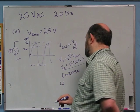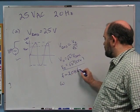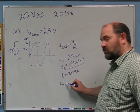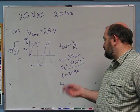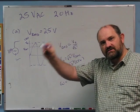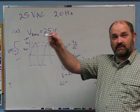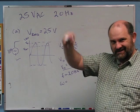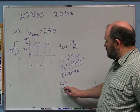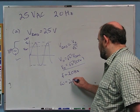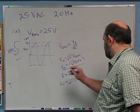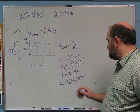Frequency in Hertz means cycles per second, whereas angular frequency is in radians per second. There are 2π radians in one cycle. So if it goes through one full cycle — like a sine wave going down and back up once — it will have gone through 2π radians. Therefore omega is bigger than frequency, and it's going to be 2π times 20 Hertz.